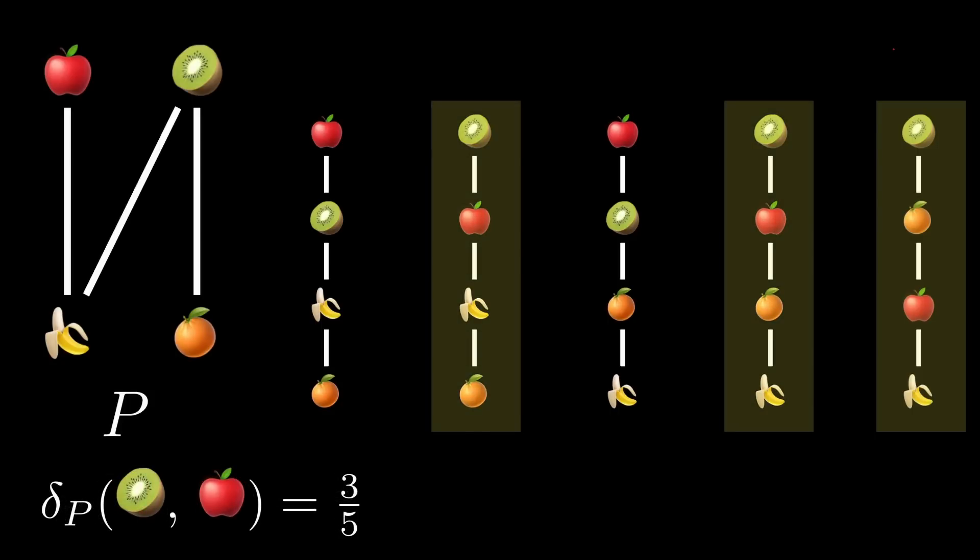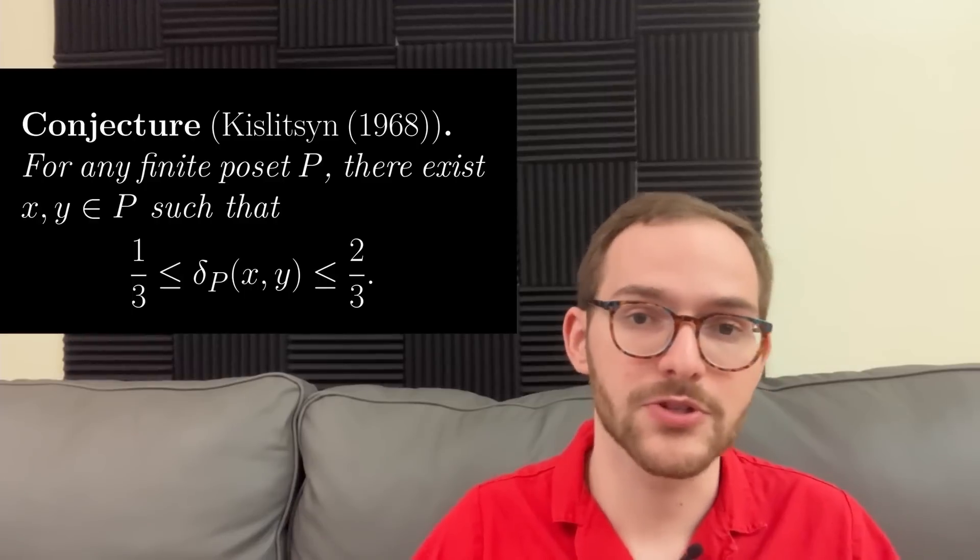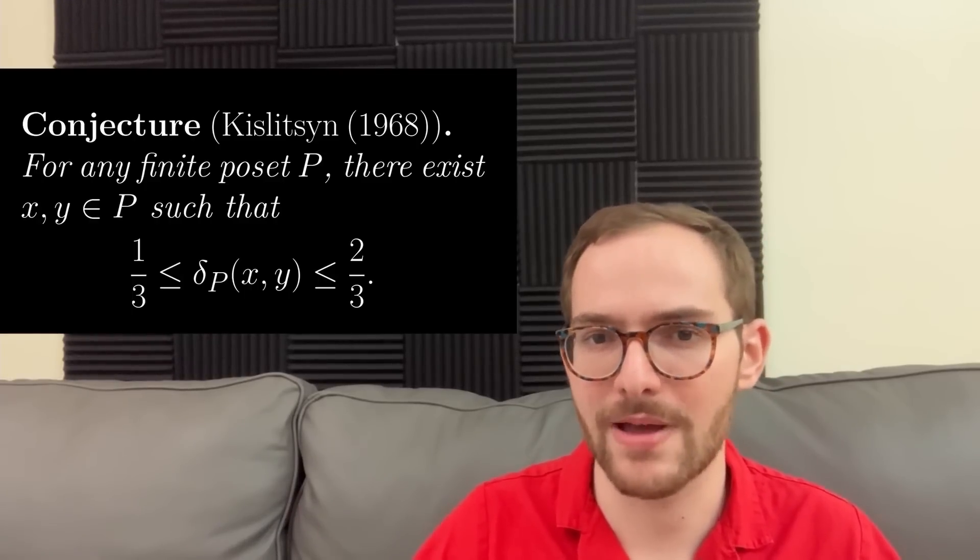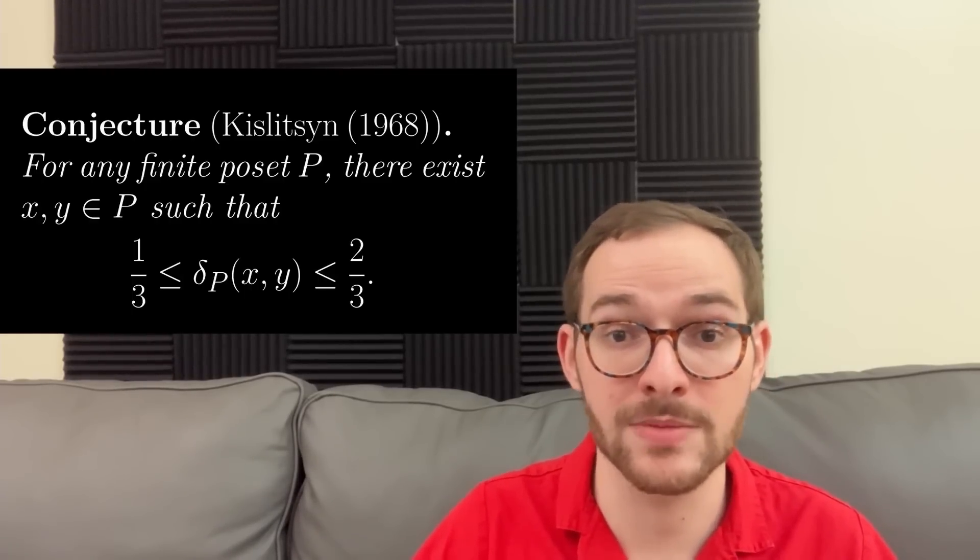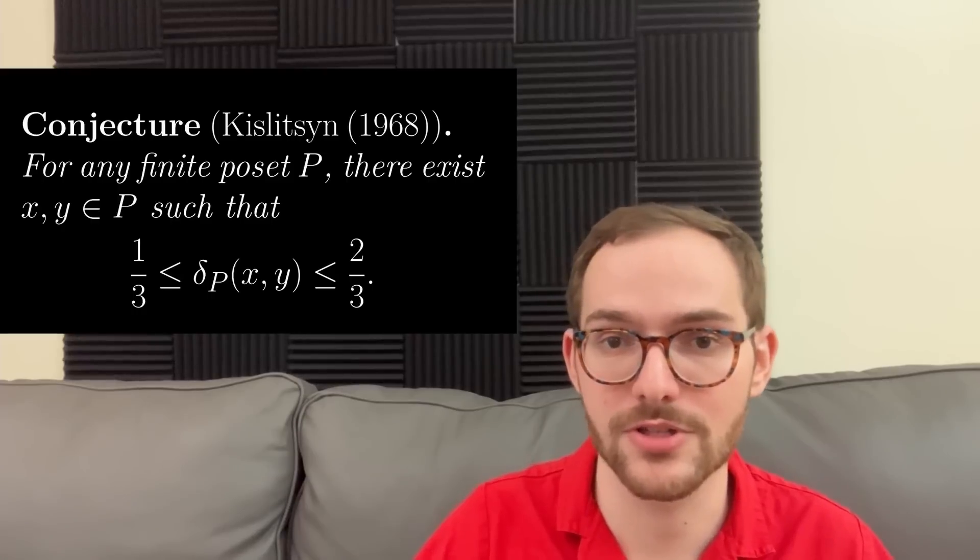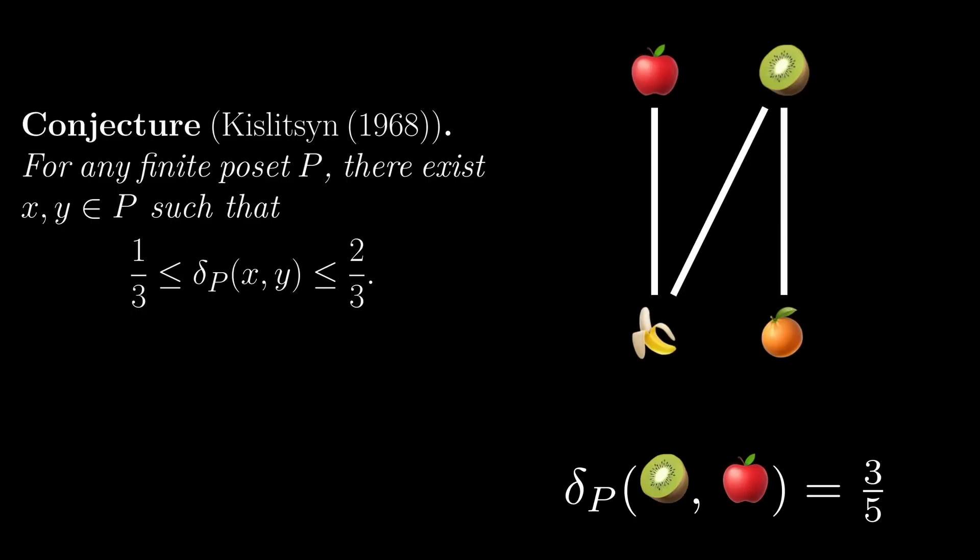In comparison, the sorting probability of kiwis over apples is three-fifths. The one-thirds, two-thirds conjecture asks if in every poset there's a pair of elements whose sorting probability is between one-third and two-thirds. Since three-fifths is between one-third and two-thirds, the pair of apples and kiwis confirms the conjecture in this case.